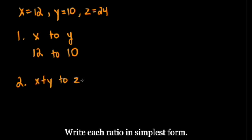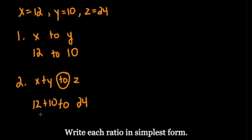This one says x plus y to z. The word "to" is written there, so we know our ratio separator goes here. Now all we have to do is plug in our numbers, so 12 plus 10 to 24, which simplifies to 22 to 24. However, if we look at both of these problems, there is one thing we can do to both of them, and that is simplify.